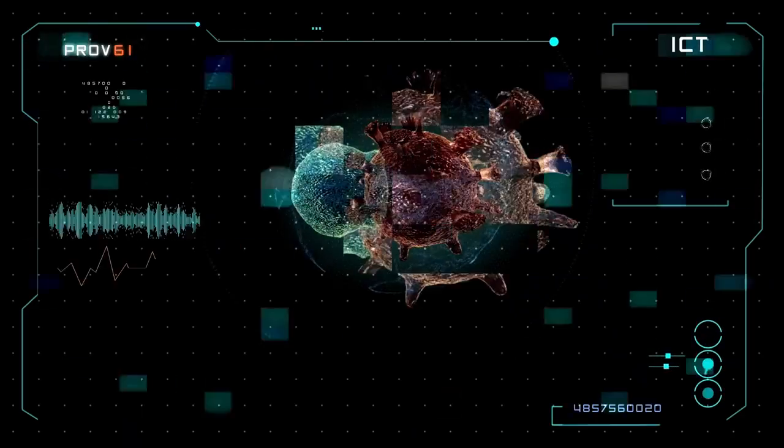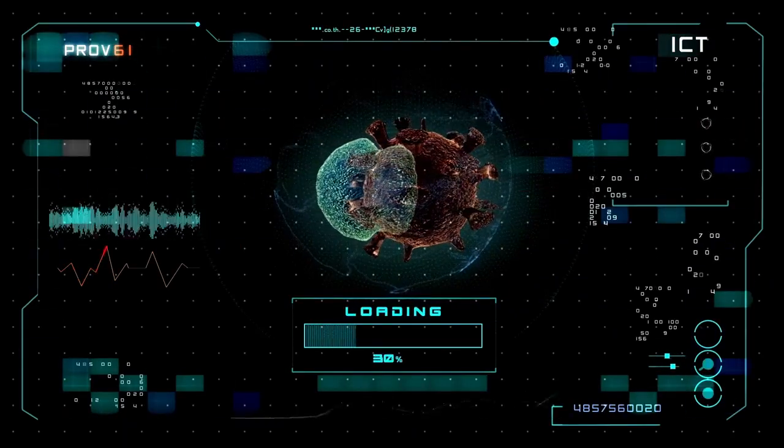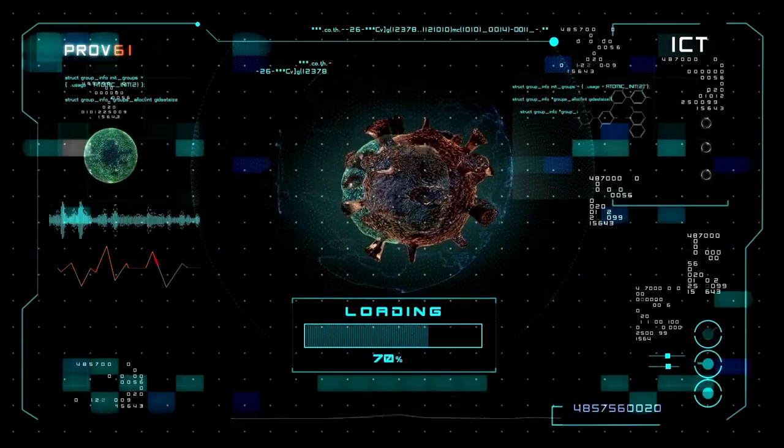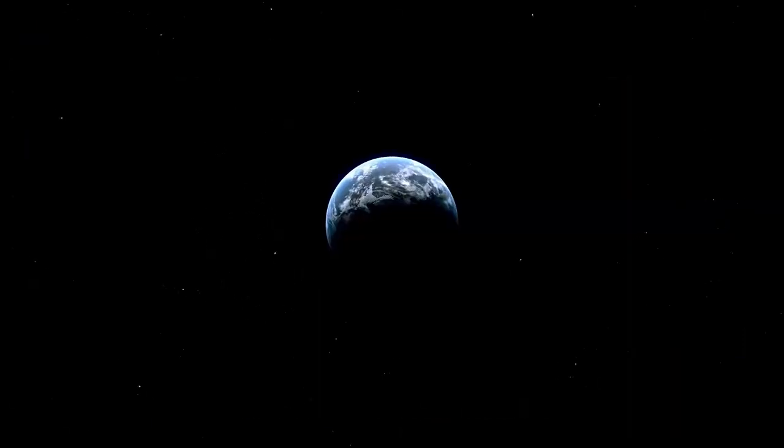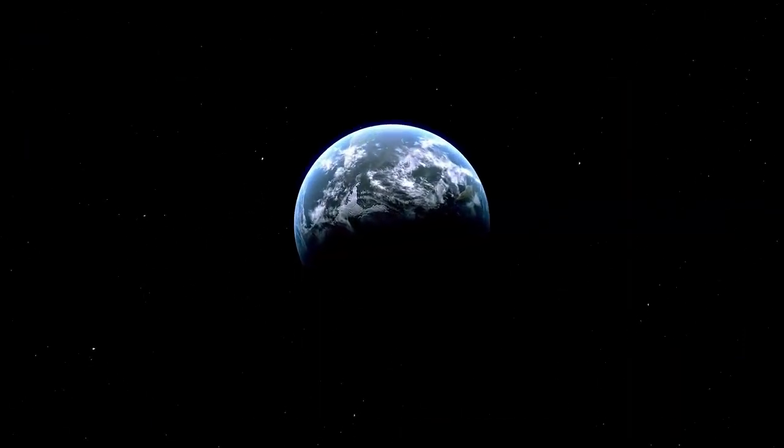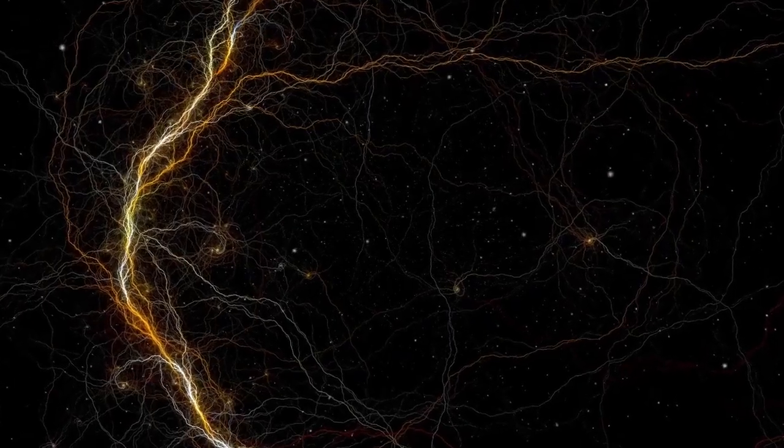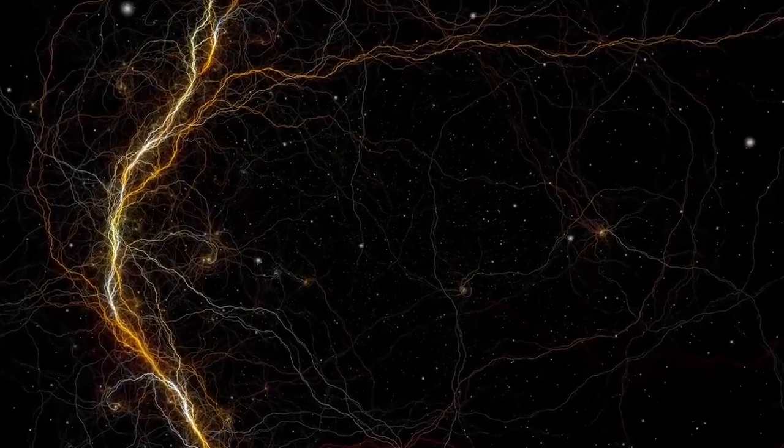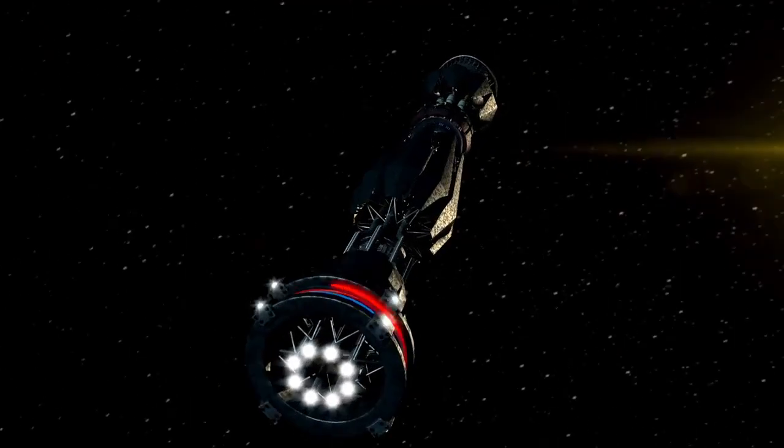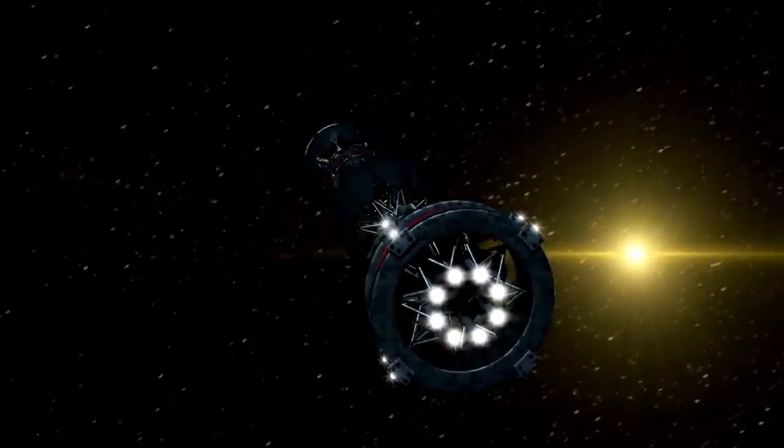If that's true, then 3i Atlas isn't just a traveler—it's a messenger, placed on a path to intersect with our gaze exactly when humanity had the technology to see it. The James Webb telescope was designed to peer into the dawn of time, but perhaps, just perhaps, it was destined to capture this object at this exact moment. And if that's the case, then the question becomes terrifyingly clear: who sent it, and why?